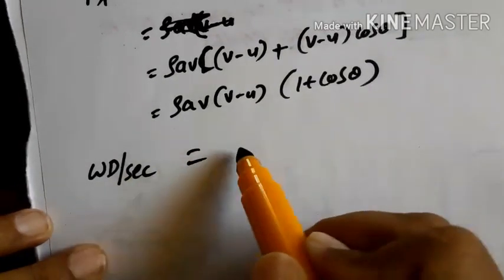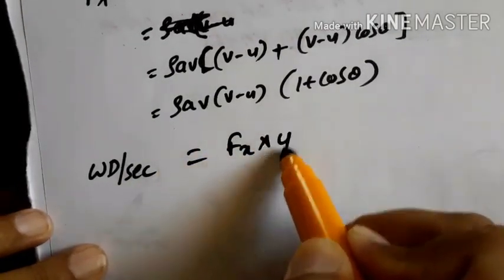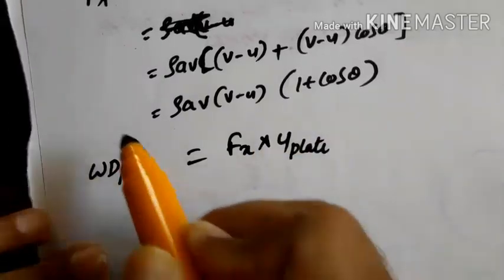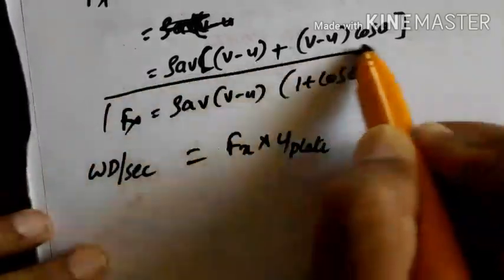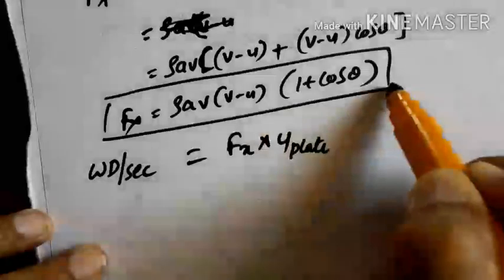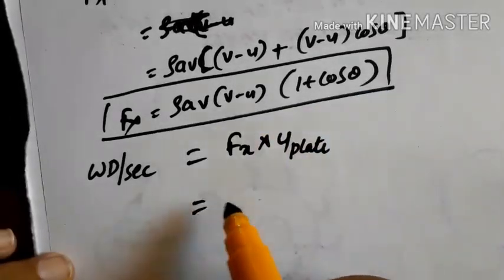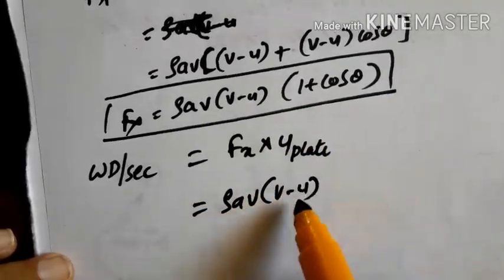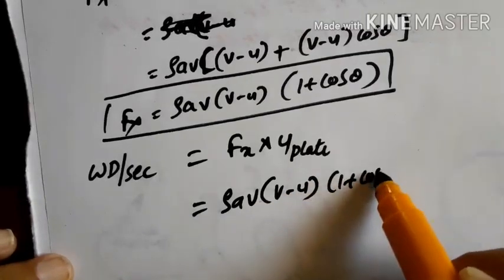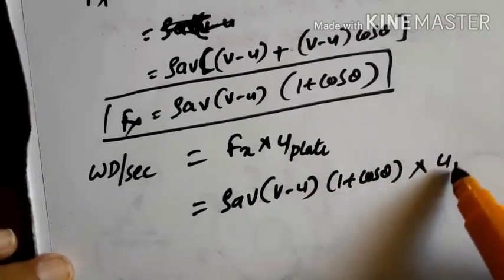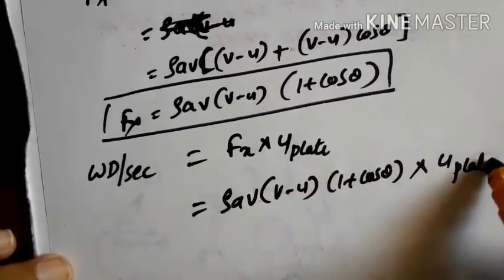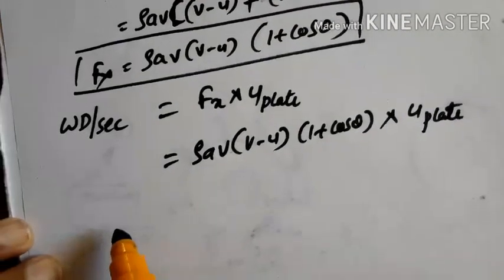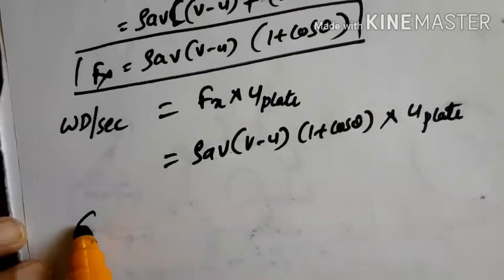Work done per second equals force into velocity of the plate. The force has already been calculated, so: Work done per second = Fx × u = ρAV(V−u)(1 + cosθ) × u. Next, we calculate the efficiency of the jet.